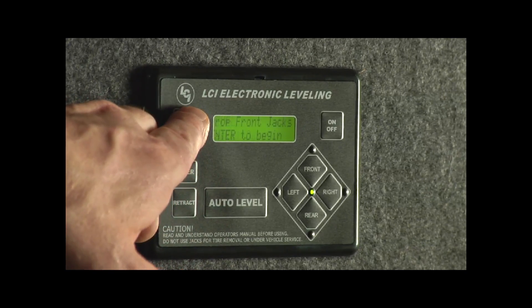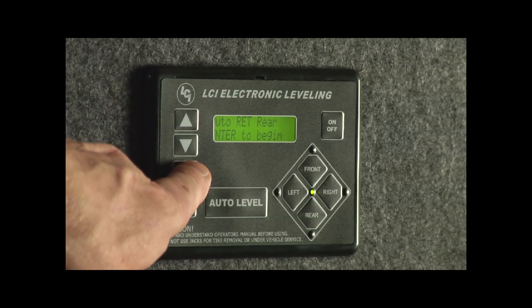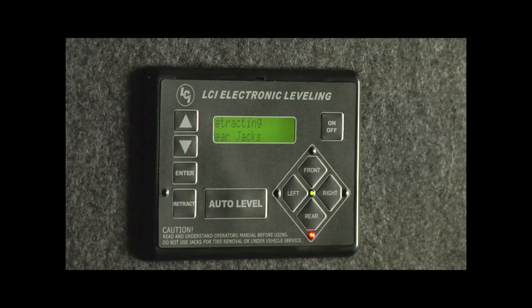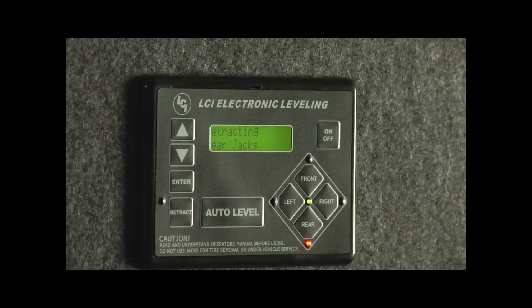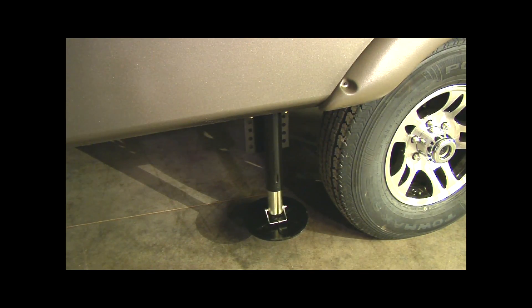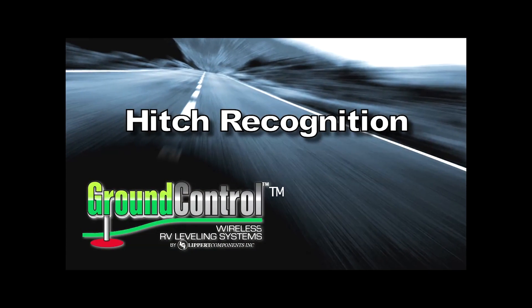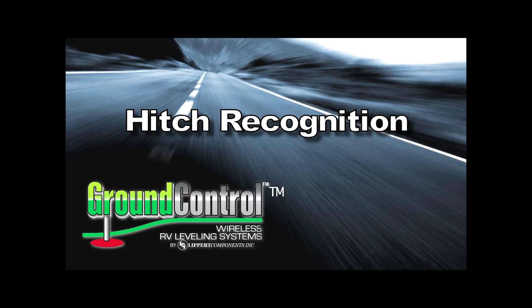We're going to scroll back up here. We're going to retract the rear jacks. We're going to hit enter. Those rear jacks are going to come up. Retract those rear jacks and then we can go into our hitch recognition next. We're retracting the rear jacks right now. We can kind of get the rest of our little camping stuff put away here. Once those are retracted and back up we'll go back through. They're back up.